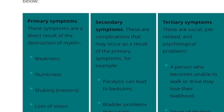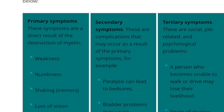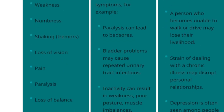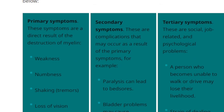There's a list of primary, secondary, and tertiary symptoms. The primary symptoms are the direct result of the destruction of myelin — weakness, numbness, shaking, loss of vision, pain, paralysis, loss of balance, and bladder and bowel problems. The secondary symptoms are complications that may occur as a result of the primary symptoms.